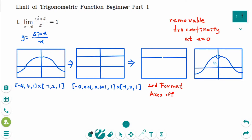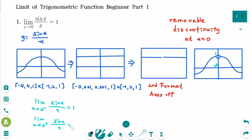The limit from the left-hand side: as x approaches 0 from the left, sin x over x equals 1. And the limit as x approaches 0 from the right-hand side, sin x over x also equals 1.